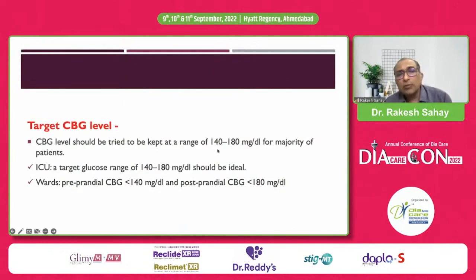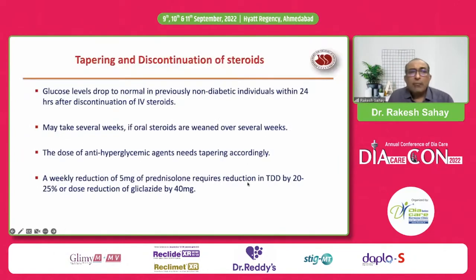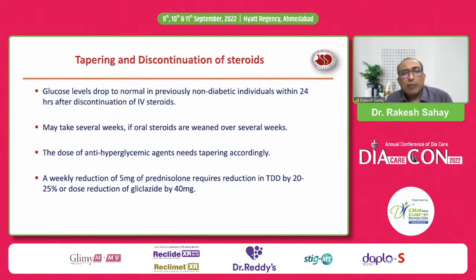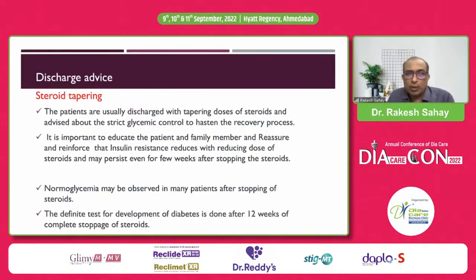Target glucose levels should be maintained between 140 and 180 mg/dL for the majority of patients — even in the ICU, maintaining 140–180 is ideal. In the wards, target pre-prandial levels of less than 140 and post-prandial levels of less than 180. When tapering steroids, anti-hyperglycemic agents should be tapered accordingly: a weekly reduction of 5 mg prednisolone requires a reduction in total insulin dose of about 20–25%, or a reduction of 40 mg of gliclazide each time the steroid dose is reduced.